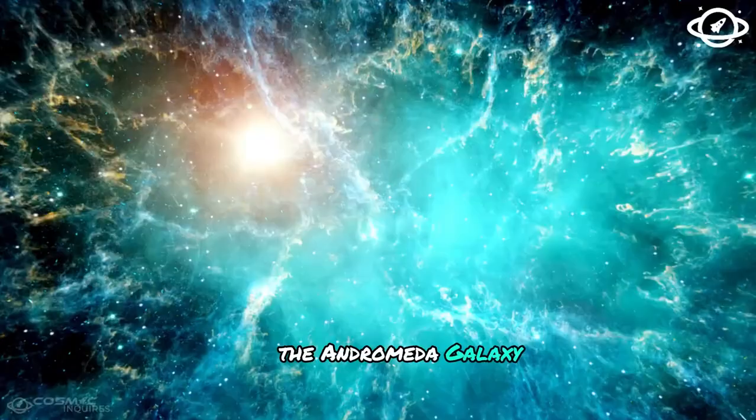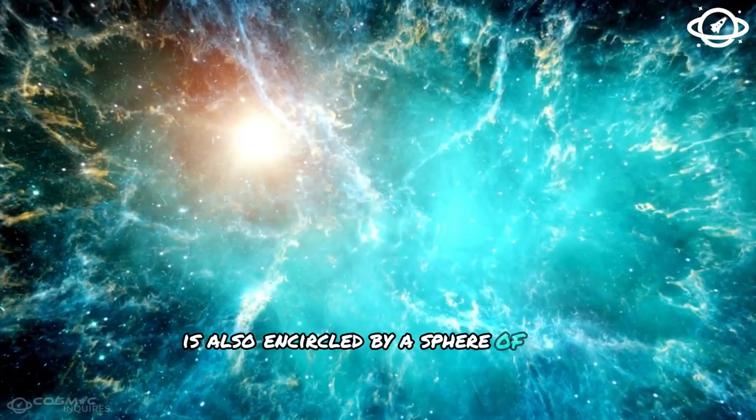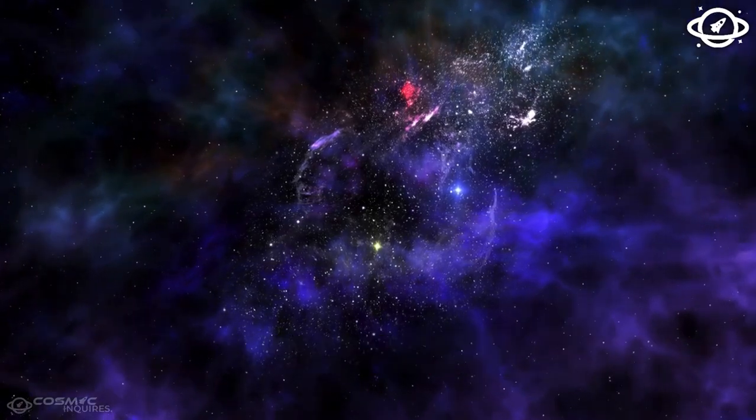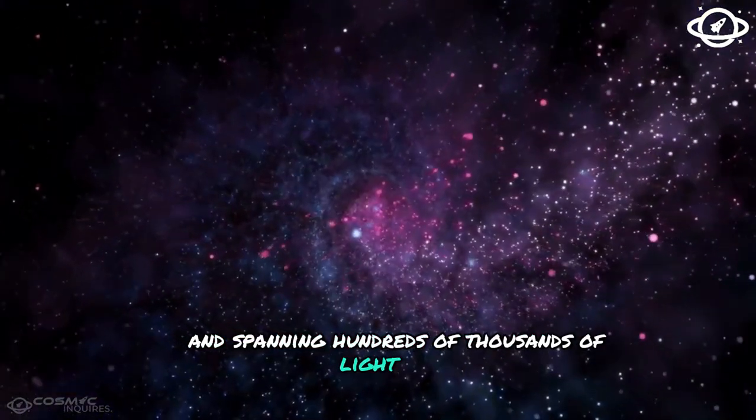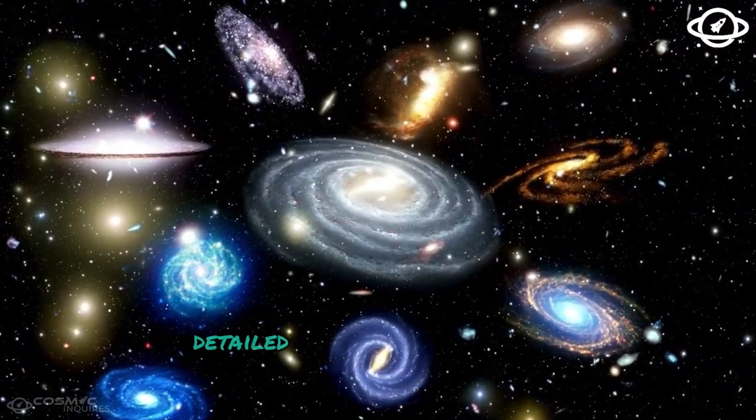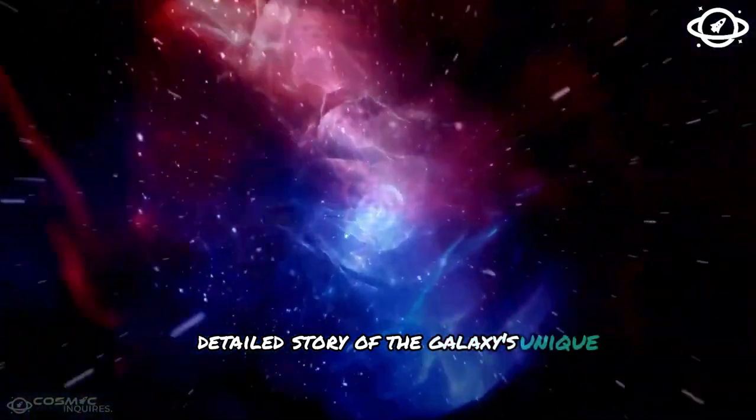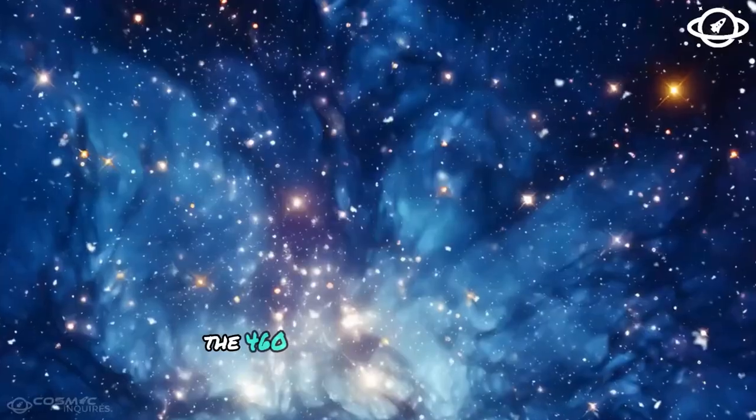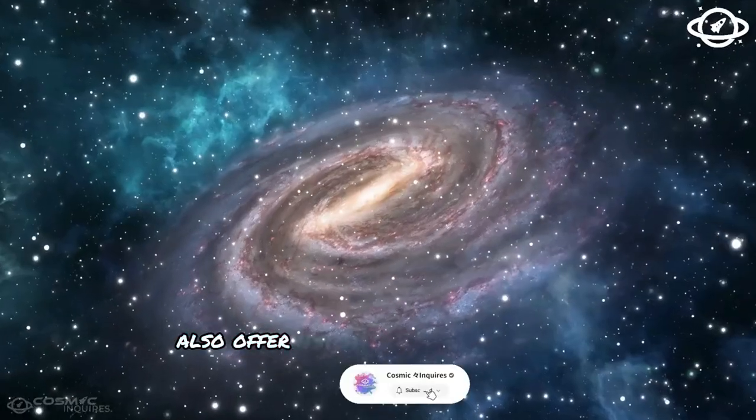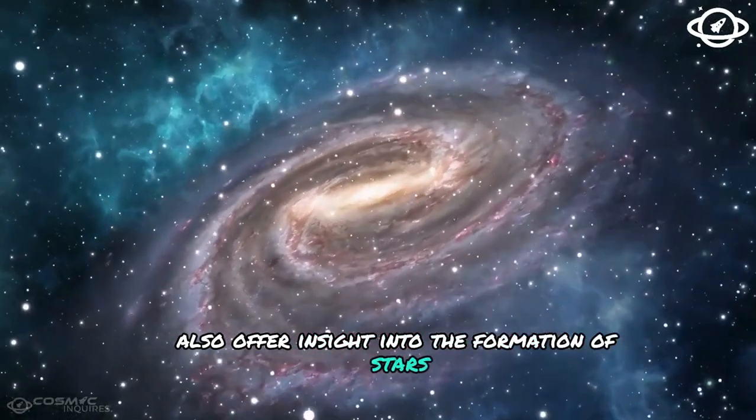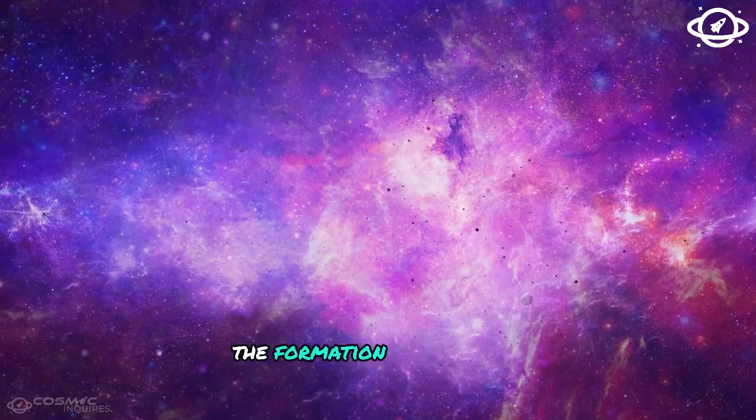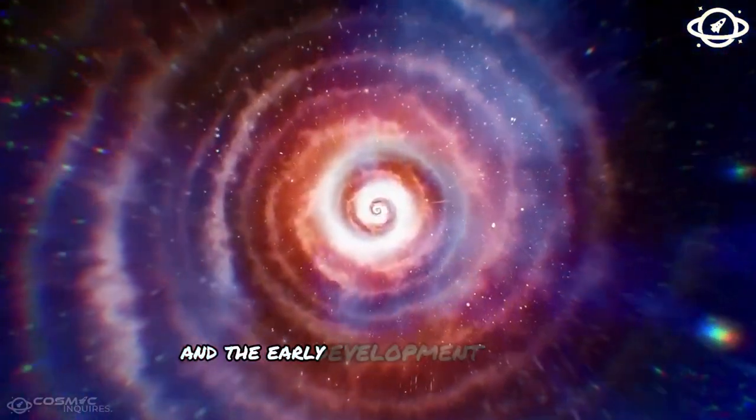The Andromeda galaxy is also encircled by a sphere of stellar debris, consisting of stars, planetary and globular clusters, and spanning hundreds of thousands of light-years in diameter. This cosmic covering tells a captivating, detailed story of the galaxy's unique origin and history. The 460 globular clusters found in Andromeda also offer insight into the formation of stars in the very early stage. This provides a clear explanation of the formation of star clusters and the early development of the galaxy.